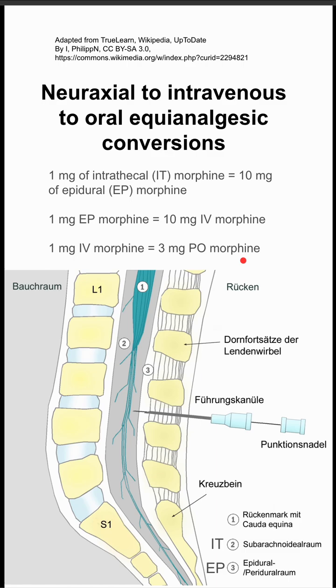So you can see that in order of decreasing effectiveness, you have intrathecal, then epidural, then IV, and then PO morphine.